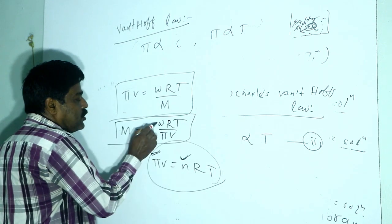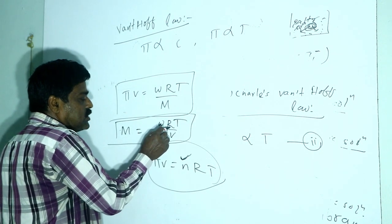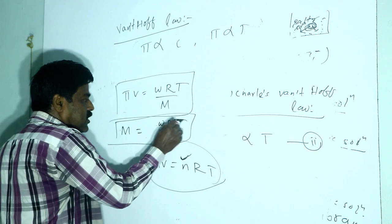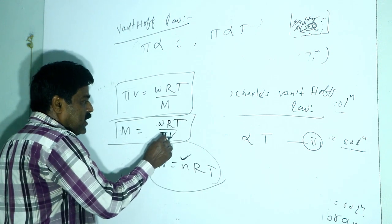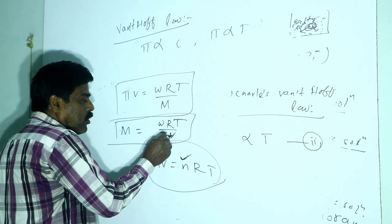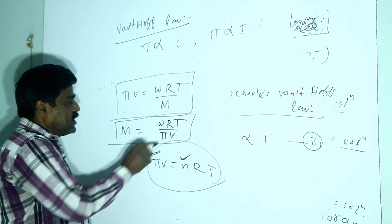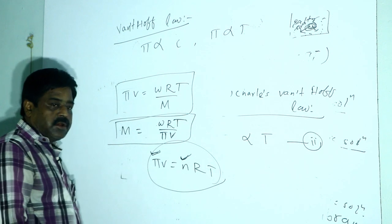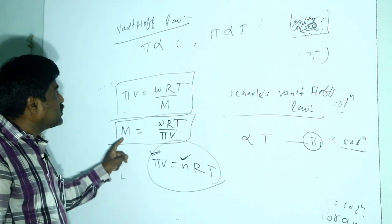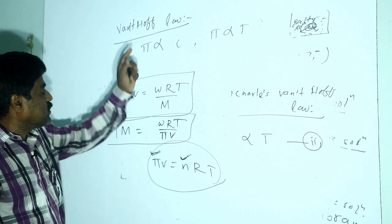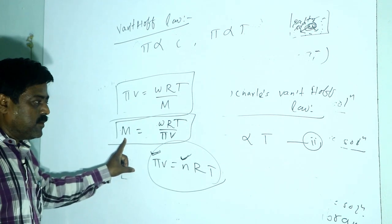The molecular mass can be easily derived as M = WRT/πV, where M is the molecular mass, W is the weight of the solute, R is the gas constant, T is the temperature in Kelvin, π is the osmotic pressure, and V is the volume of the solution in liters. This formula allows us to determine molecular mass from osmotic pressure data.